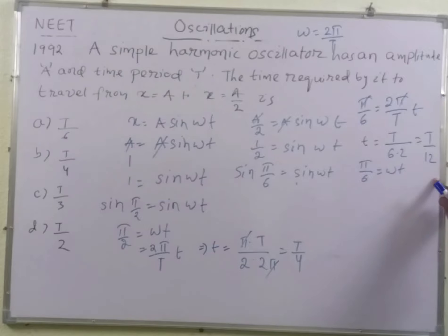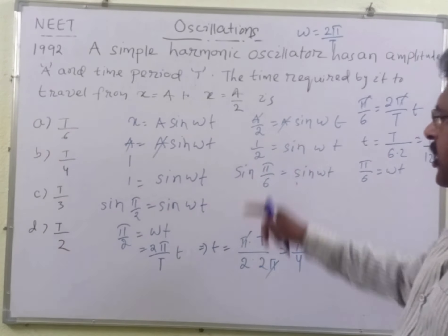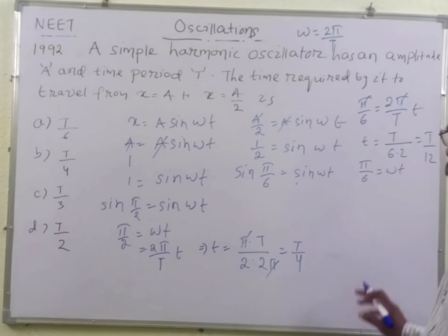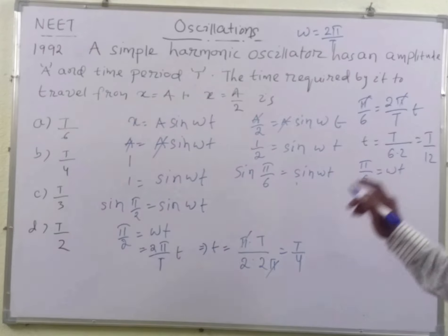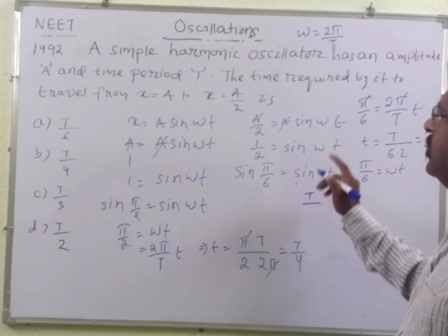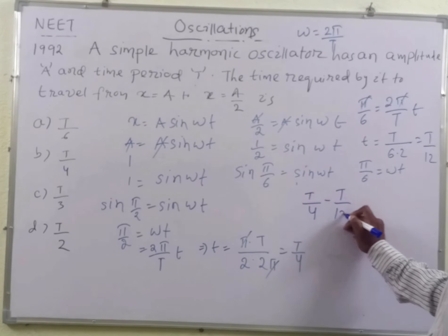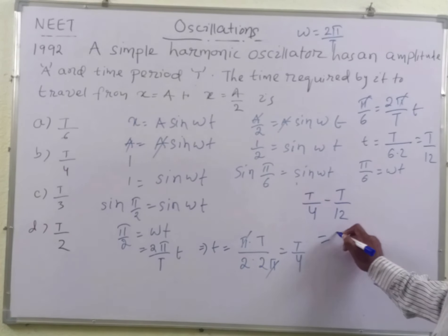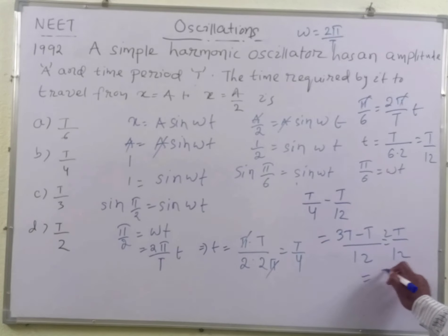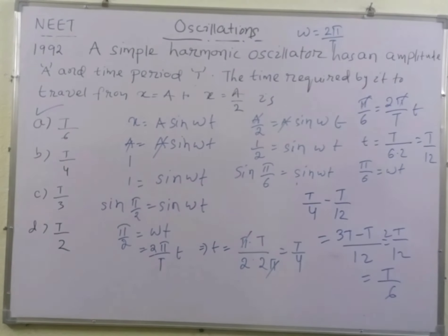At time T equal to T by 4, the position X will be equal to A, and at time T equal to T by 12, the position X will be equal to A by 2. So the time required to travel from X equal to A to X equal to A by 2 will be T by 4 minus T by 12, that is 3T minus T equals 2T by 12, or T by 6. That is option A, so option A is correct, students.